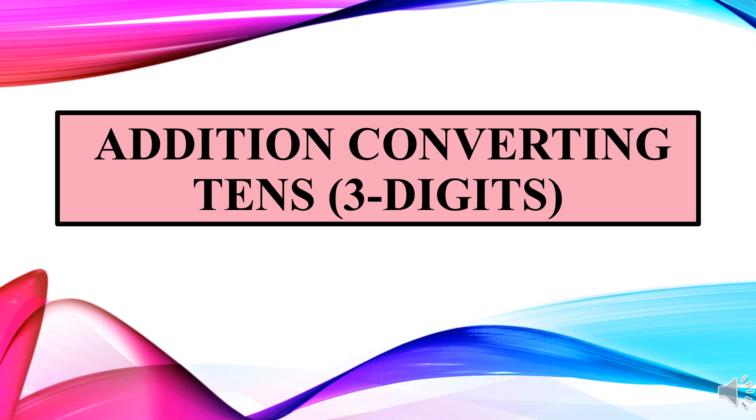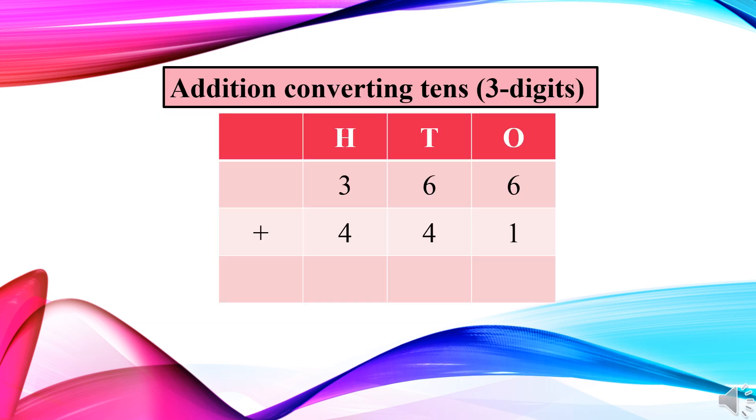And obviously, we will not write the number in tens place. So the number will be shifted. So vaha se ek number, hundreds place pe shift ho jae ga, right? Isse haam kahte hai addition converting tens. Let's take an example to clear the concept of addition converting tens, three digits.